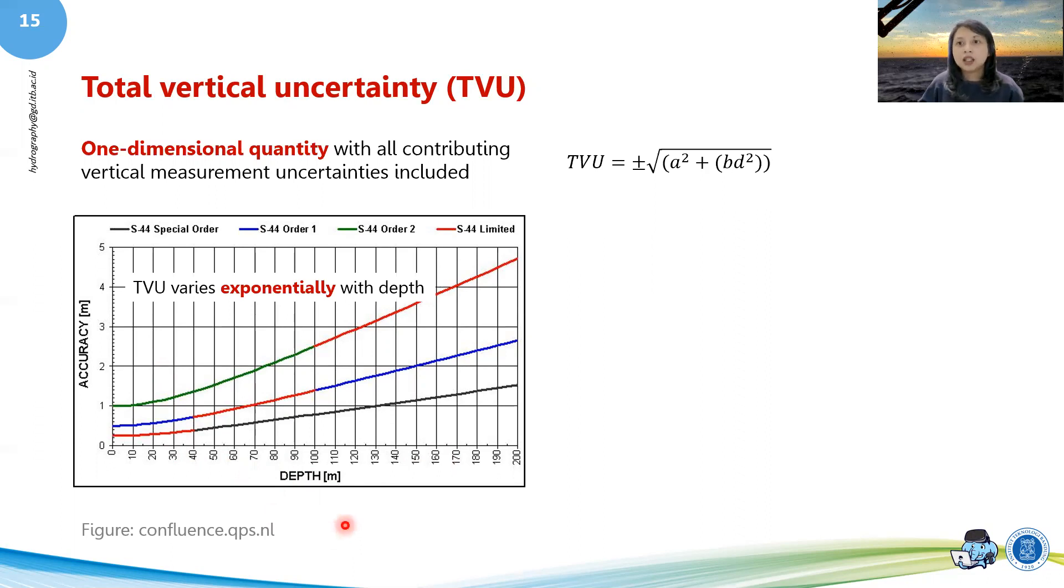So the TVU actually varies exponentially with depth. So the deeper it is, actually you've got more error budget. When you've got more error budget, basically you can make more mistakes the deeper you go. But when you're at shallow water, then you must be very, very careful, which makes a lot of sense.